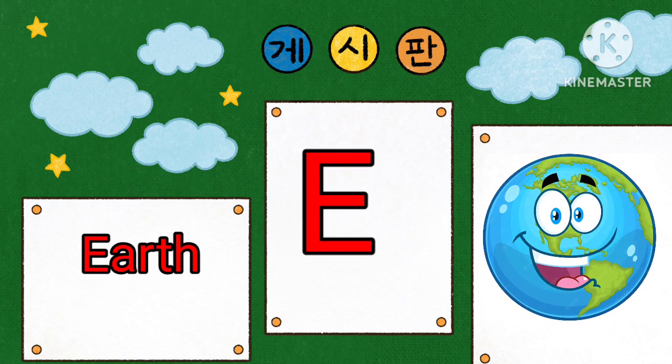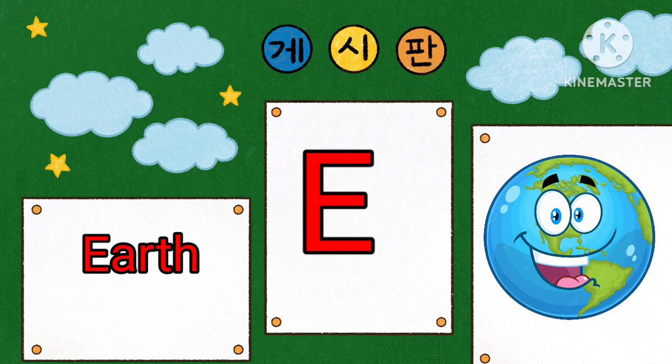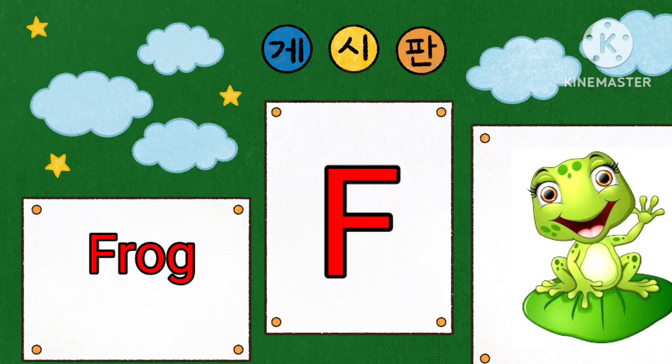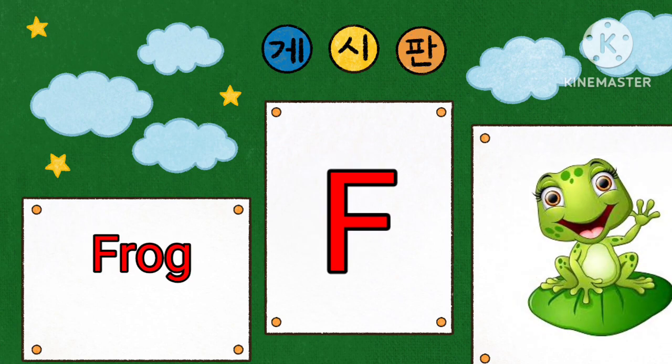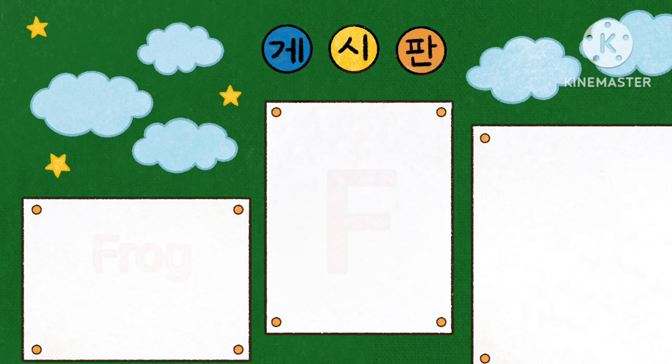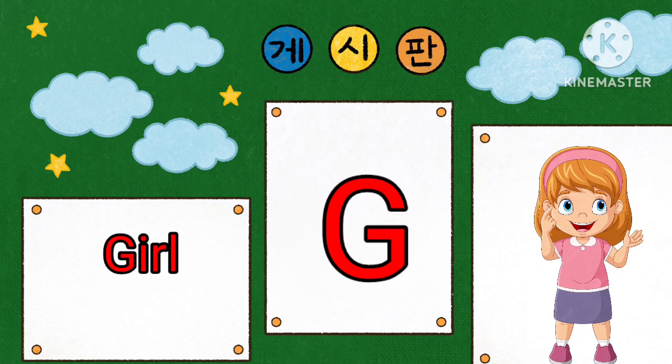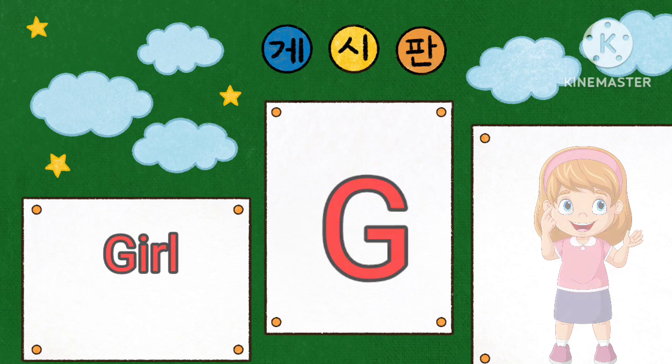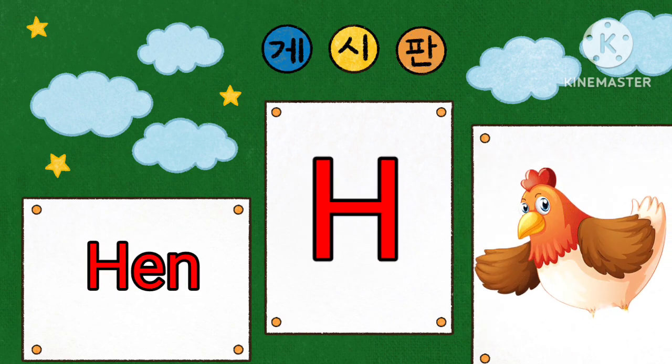E is for Earth. F is for Frog. G is for Girl. H is for Hair.